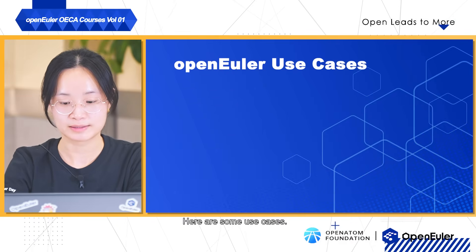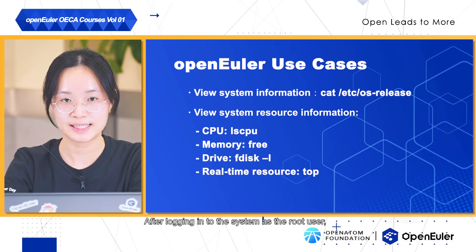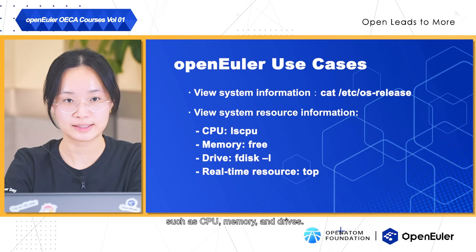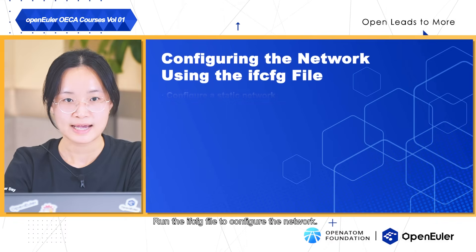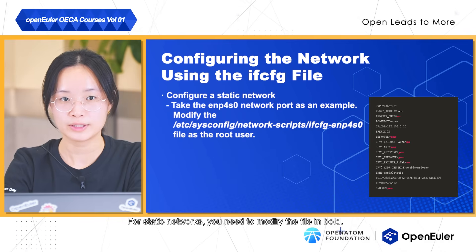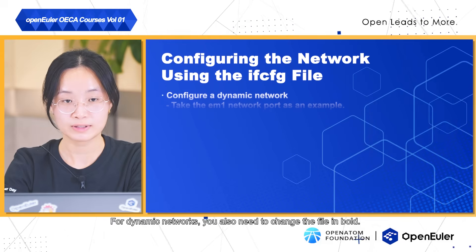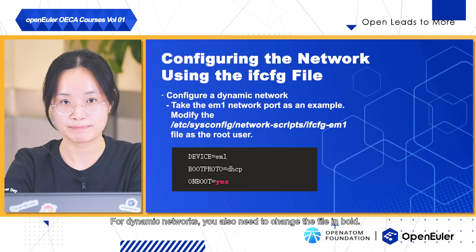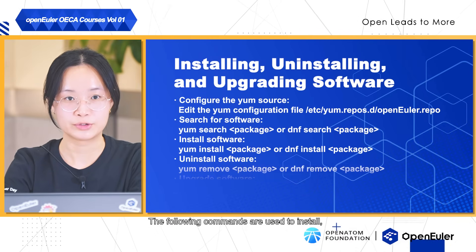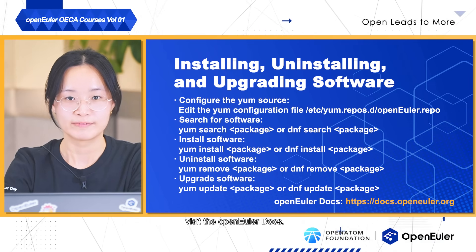Here are some use cases. Note that OpenEuler does not provide a UI console. After logging into the system as the root user, run the following commands to view system or resource information, such as CPU, memory, and drives. Run the IFCFG file to configure the network. For static networks, you need to modify the file. ENP4S0 is an example network port. For dynamic networks, you also need to change the file. EM1 is an example network port. The following commands are used to install, uninstall, and upgrade software. For more details about OpenEuler, visit the OpenEuler docs.